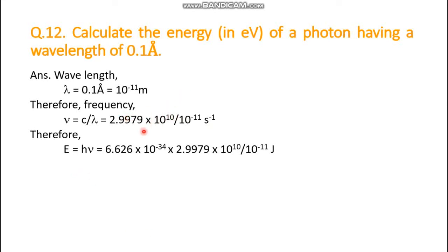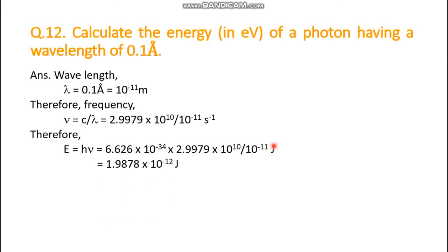We calculate the energy directly using E = hν. Planck's constant h = 6.626 × 10⁻³⁴ joule·second, and the frequency value has been calculated. Since the units are joule·second times second⁻¹, the seconds cancel and joule remains. The final result is 1.9878 × 10⁻¹² joule. This is the required energy.